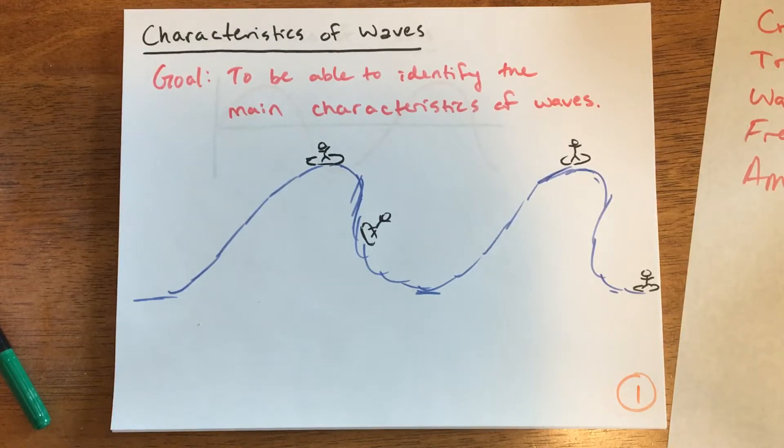Our goal today is to identify the main characteristics we use to talk about waves. In the same way that when you're dealing with a chemical substance, you have different ways to analyze it—color, mass, those sorts of things—waves have a set of characteristics as well.